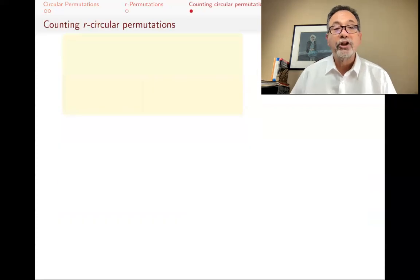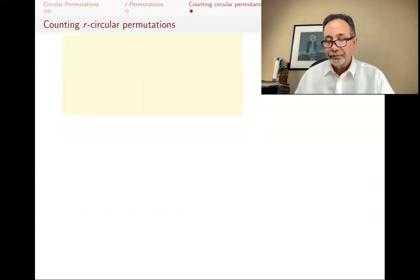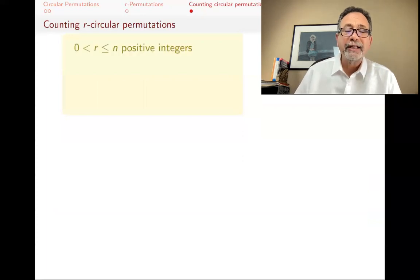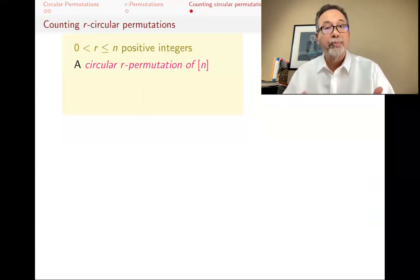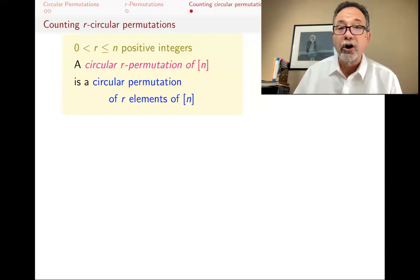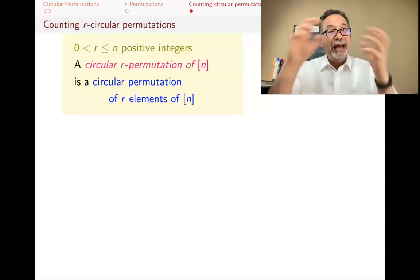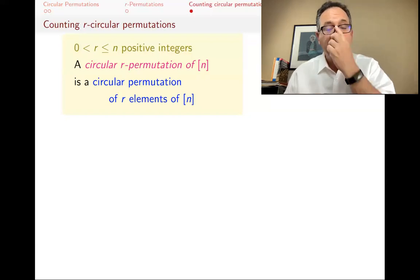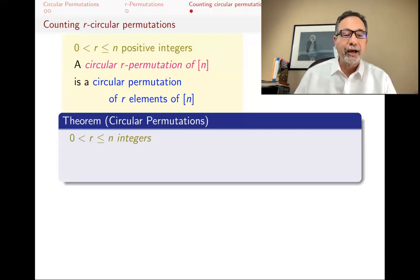Now let's define what a circular R-permutation is and then count them. R is again a positive integer less than or equal to N. A circular R-permutation of bracket N — as opposed to an R-permutation — is a circular permutation of R of the elements of bracket N. So you pick R elements and put them around that round table, and we want to count how many different ways you can do that.